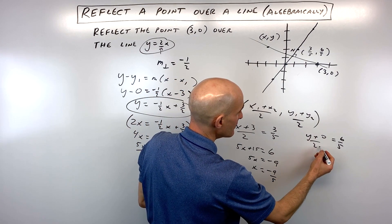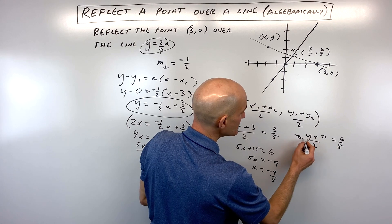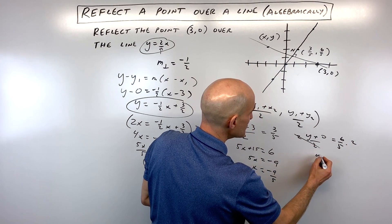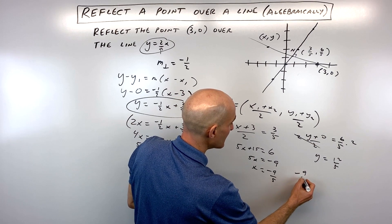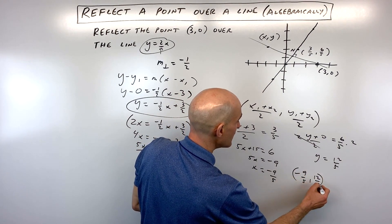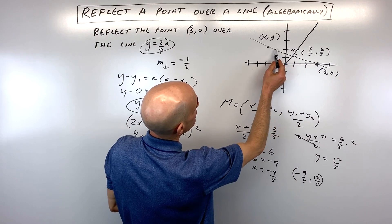Over here, y plus 0 is just y. If we multiply both sides by 2, you can see that y is going to equal 12 fifths. And so what we've got here is negative 9 fifths comma 12 fifths is the location of this reflected point.